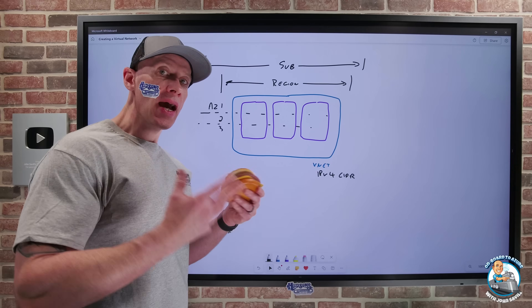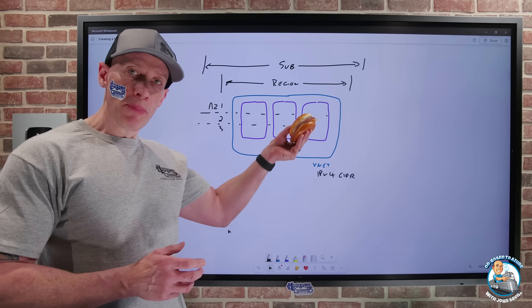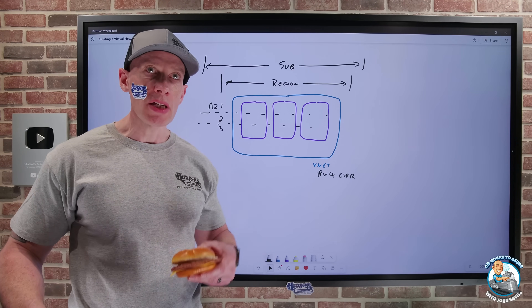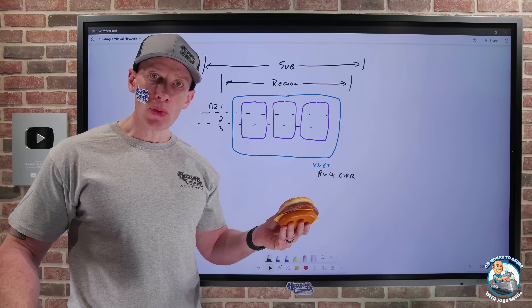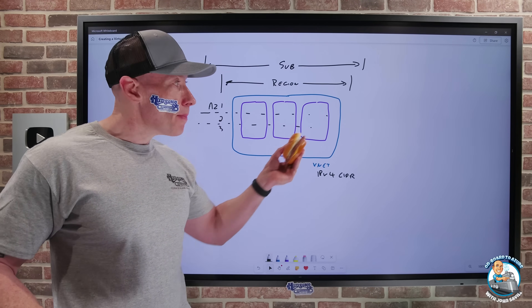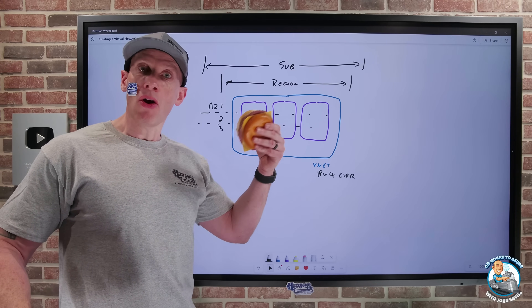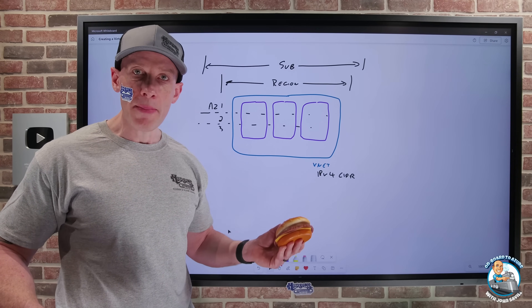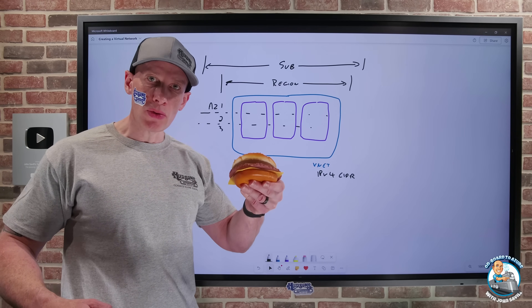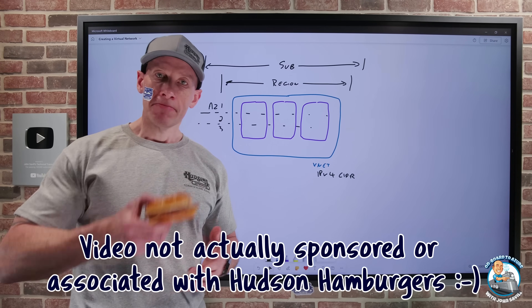Once we've entered all this information, we can complete and go ahead and create our virtual network. Now once we have this virtual network with its various subnets, I can very easily create various resources and connect them into that virtual network. They could then take advantage of connectivity — maybe I peer this to other virtual networks, maybe I have connectivity to on-premises, whatever that might be. I'm now ready to leverage this for my resources. I really hope this helps, and until the next video, take care.